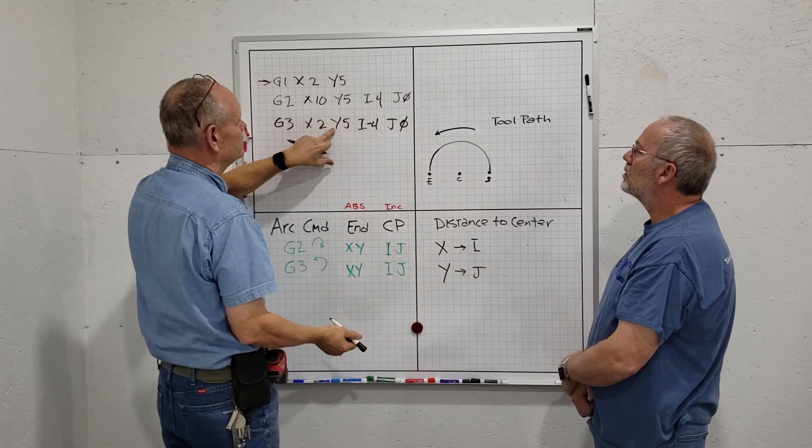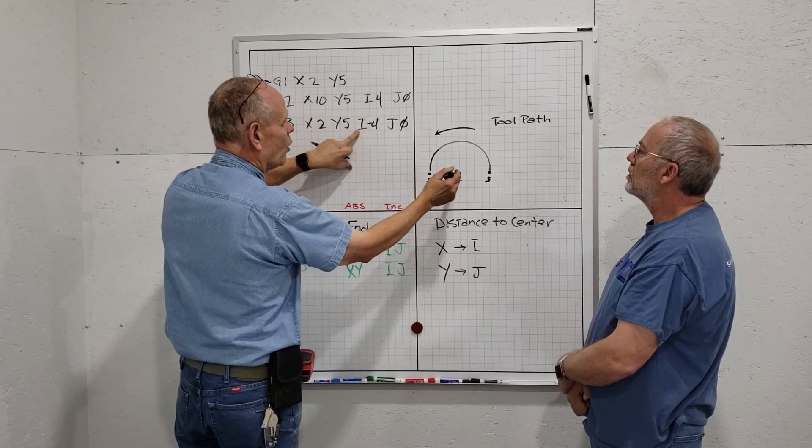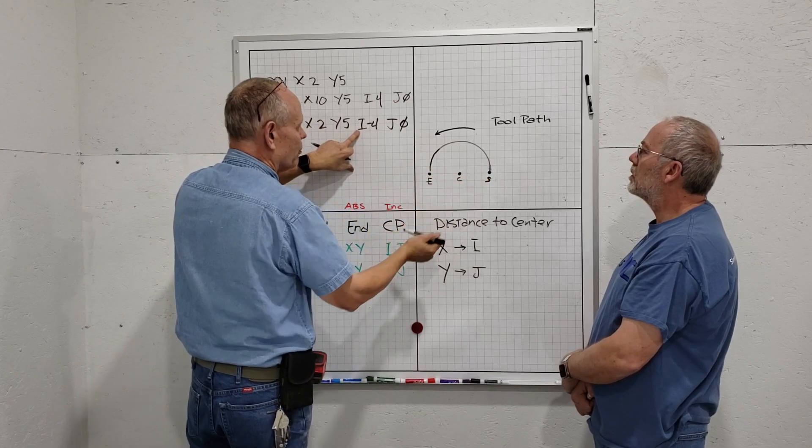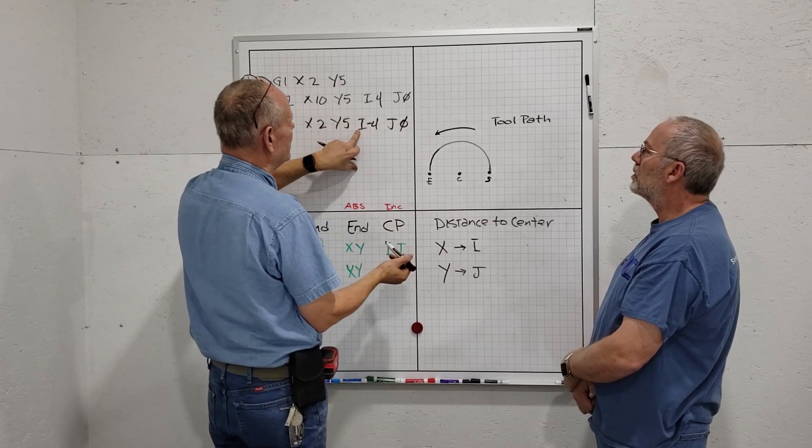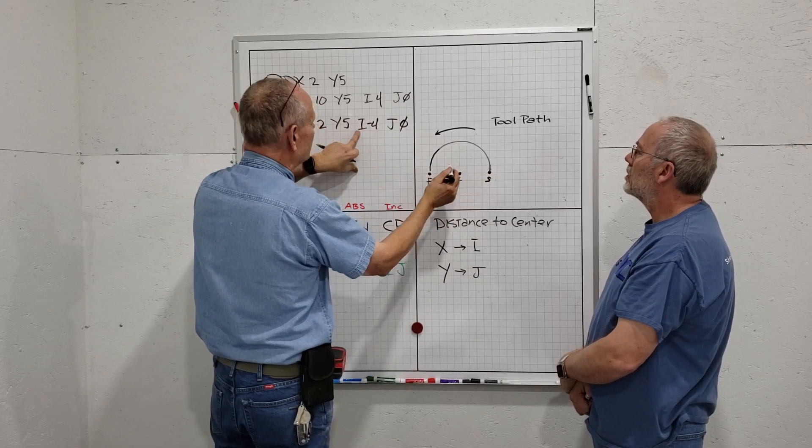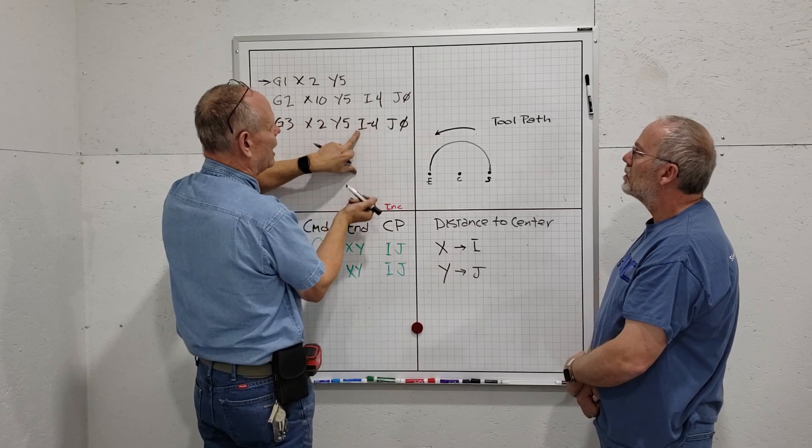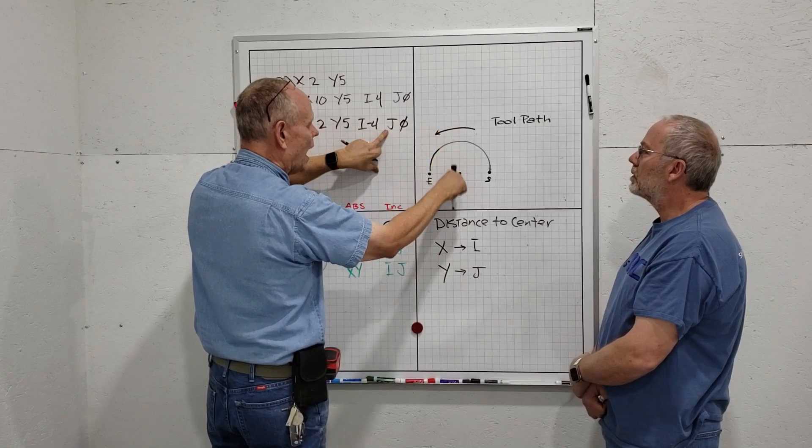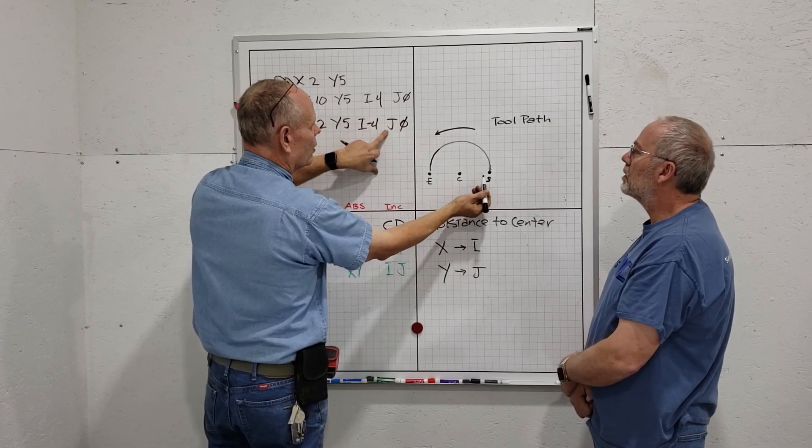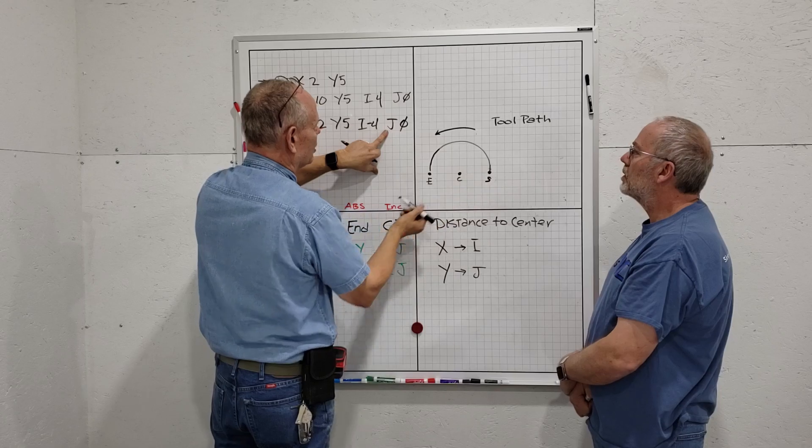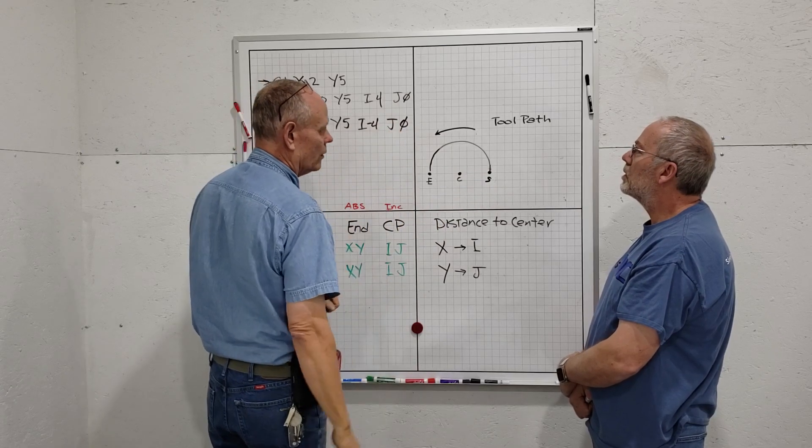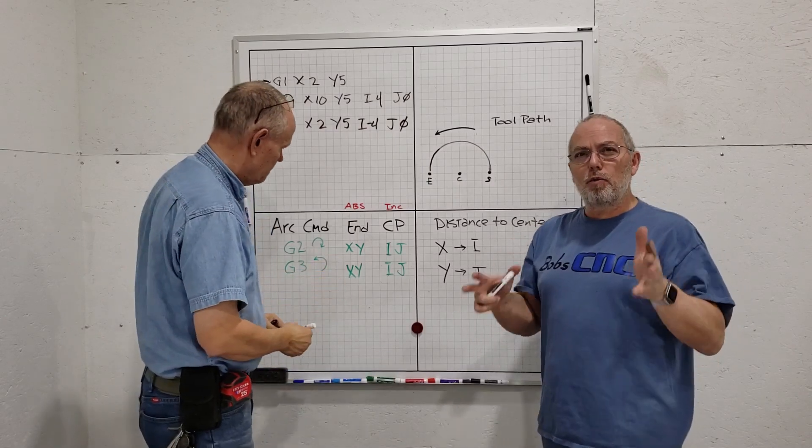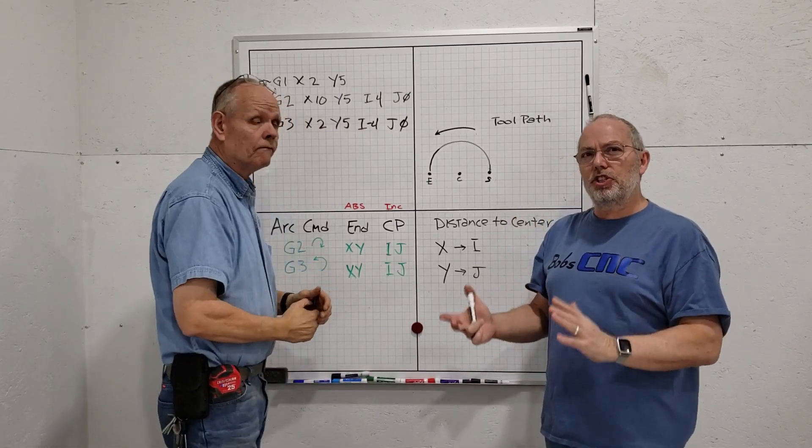Now I have to define where my center point is. Again, it's measured from my start point. On the X-axis, I'm one, two, three points over—that's I4. Once again, on the Y-axis going up and down, I'm not moving at all. I'm on the same plane, so I'm J0.